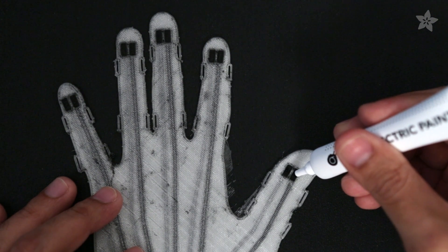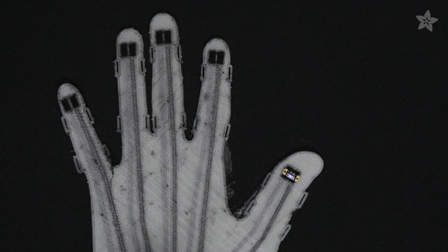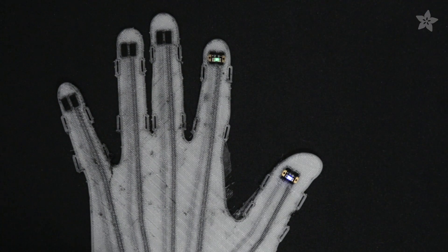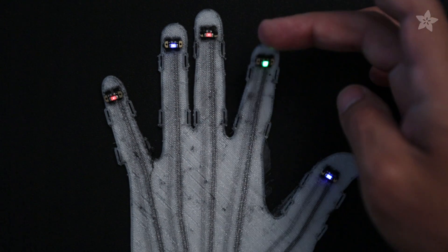If everything works, we can use bare conductive paint to secure the LED sequins to the fingertips. This actually adheres pretty well to NinjaFlex and it helps pass those electrons from the conductive filament to the LEDs. And if you look carefully, you can actually see the LEDs get brighter as the paint dries. You only need a small amount to keep the LEDs in place.